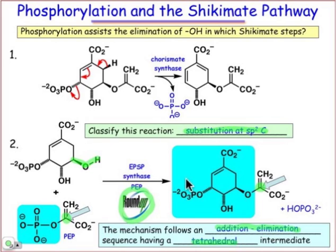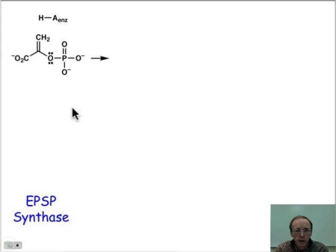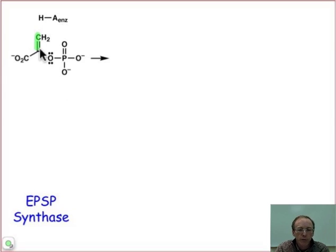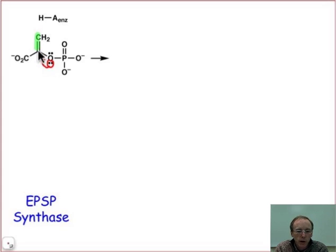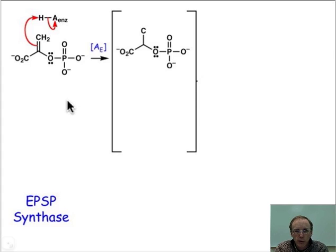Let's understand the mechanism so we can understand how Roundup — a competitive inhibitor that's a transition state analog of a key portion of the rate-determining step of this substitution reaction — causes its interference. It's all in the first step: as we set up to do that addition-elimination, the first thing that happens is that the double bond of the phosphoenolpyruvate, which benefits from donation of electron density from the non-bonding pair of electrons into π*, makes that a fairly nucleophilic carbon-carbon double bond. This is the rate-determining step for the overall substitution process.